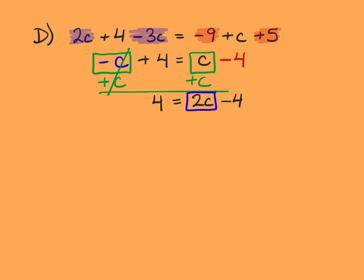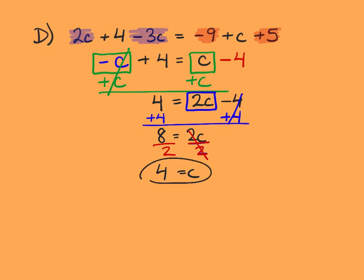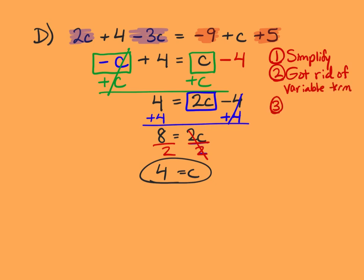Now we just have a two-step equation. I'm going to box in my c term, then get rid of minus 4 by adding 4 to both sides, and we get 8 equals 2c. Dividing both sides by 2, c equals 4. This problem had several steps — a common setup for variables on both sides. First we did any simplifying, second we got rid of a variable term, and then third we solved — it'll usually be a one or two-step equation, often two.